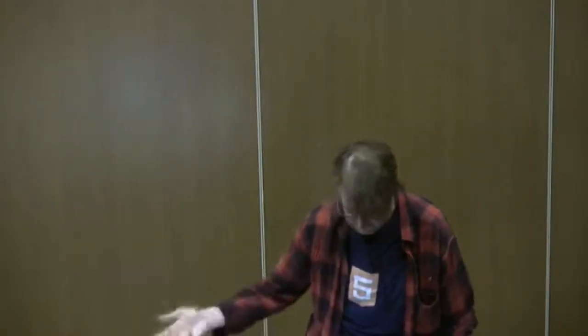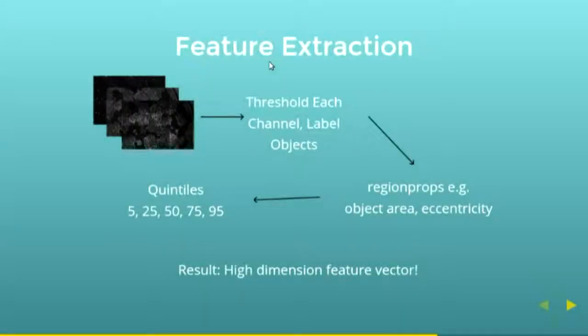Then for each of those properties, we quantify the quintiles. We get the value of the bottom fifth quintile, the median, the upper 95th percentile. The result is we have a high-dimension feature vector, which is just fancy math speak for we've got an array of a bunch of numbers that describe the image.